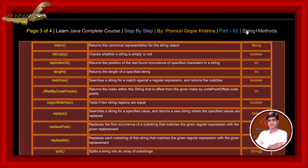replace method searches a string for a specified value and returns a new string where specified values are replaced. replaceFirst method replaces the first occurrence of a substring that matches the given regular expression with the given replacement. replaceAll method replaces each substring of the string that matches the given regular expression with the given replacement. split method splits a string into an array of substrings.